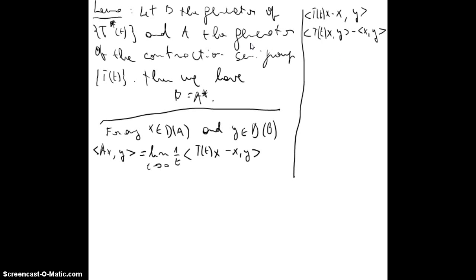And now we know that T* is the adjoint of T(t), so we will have <x, T*(t)y>. This will remain the same, and now knowing that we have here an x, here an x, we can join both of them, and we will have, finally, <x, T*(t)y - y>.